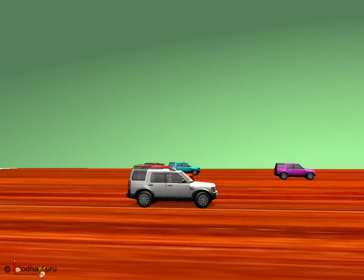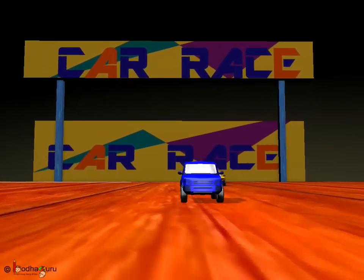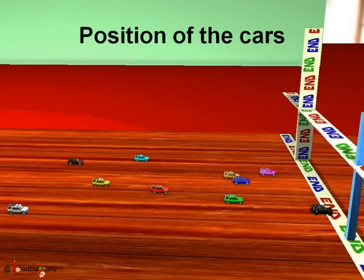So, let us see the position of all the cars in the car race. 1st — black. 2nd — pink car. 3rd — dark blue. 4th — green. 5th — dark yellow. 6th — red. 7th — sky blue car. 8th — light yellow car. 9th — maroon car. And 10th — white car.